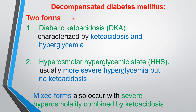There are two forms of decompensated diabetes mellitus. One is diabetic ketoacidosis, called DKA, and the other is hyperosmolar hyperglycemic state, called HHS. The difference between these two is that in DKA there is ketoacidosis and hyperglycemia both occurring together. While in HHS — hyperosmolar hyperglycemic state — the hyperglycemia is more severe than in DKA, but there is no ketoacidosis. We will see the details of these two in the subsequent slide presentations.